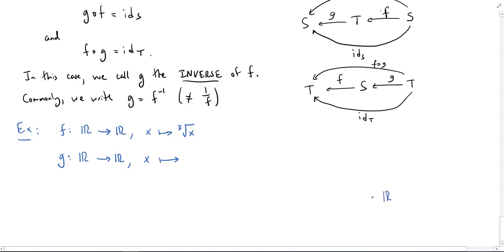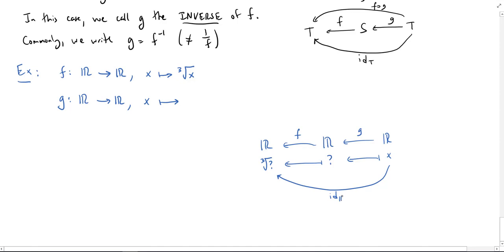So I have the real numbers to the real numbers to the real numbers, and I know I have this g, and it's going to send x to something. Question mark. But then I have this f, which is going to take the cube root. So this question mark will go to the cube root of the question mark. On the other hand, I want to have the identity on R as this composition. Well, where would the identity send x? The identity would send x just to x. So this tells me these have to be equal. So the cube root of question mark has to equal x. Well, let's cube both sides. Then I get question mark equals x cubed. And so this tells me what my g should do. It should send x to x cubed.